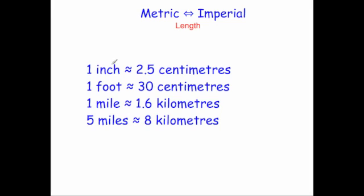Here are four approximations that are quite useful to learn. One inch is approximately equal to 2.5 centimeters — you can look at your ruler and check that. One foot is approximately equal to 30 centimeters, so those 30-centimeter rulers — the larger rulers — are roughly equal to one foot. One mile is approximately equal to 1.6 kilometers. I know this one off by heart because four laps of a running track is 1.6 kilometers, and that's roughly equal to a mile.